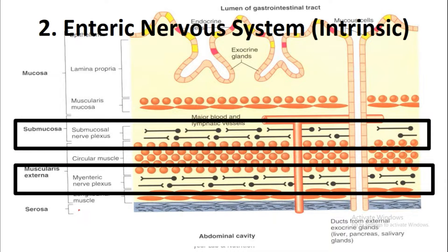The second type is the enteric nervous system, also known as the intrinsic nervous system. It includes two plexuses of neurons present in different layers of the gastrointestinal tract. The first is the submucosal plexus, or Meissner's plexus, present in the submucosa. The second is the myenteric plexus, or Auerbach's plexus, present in the muscularis externa.